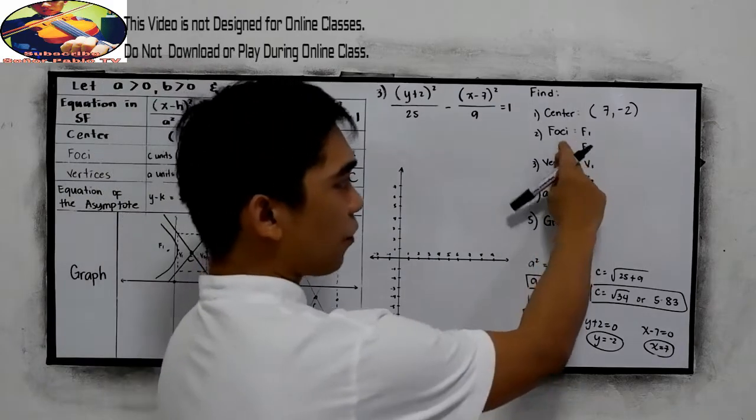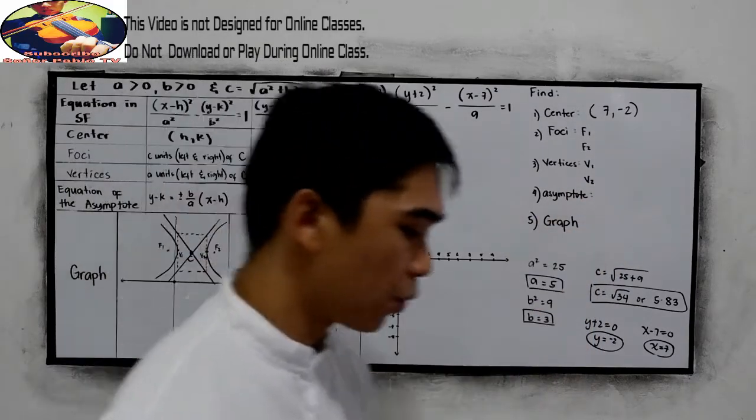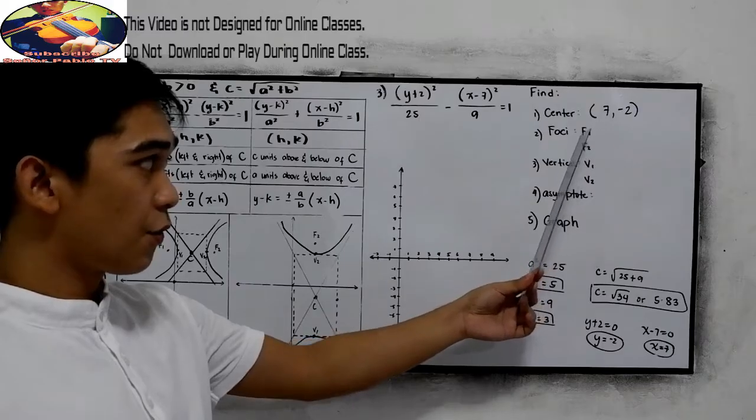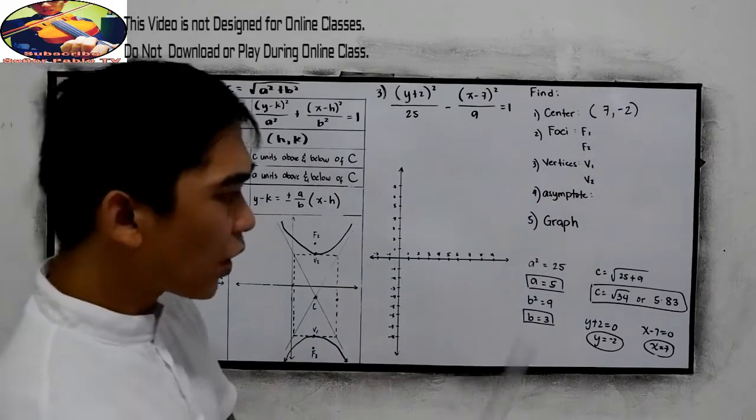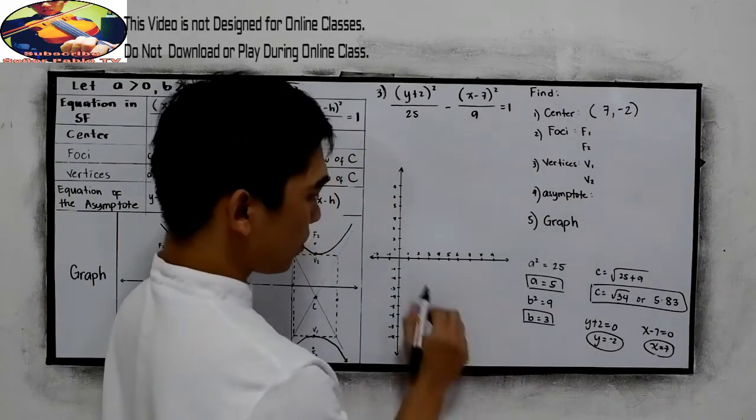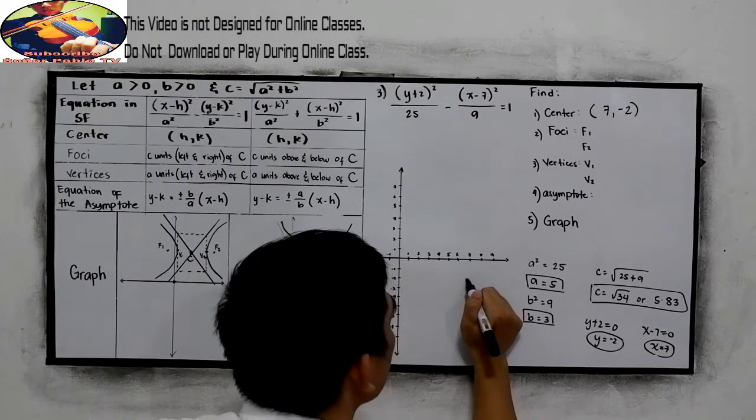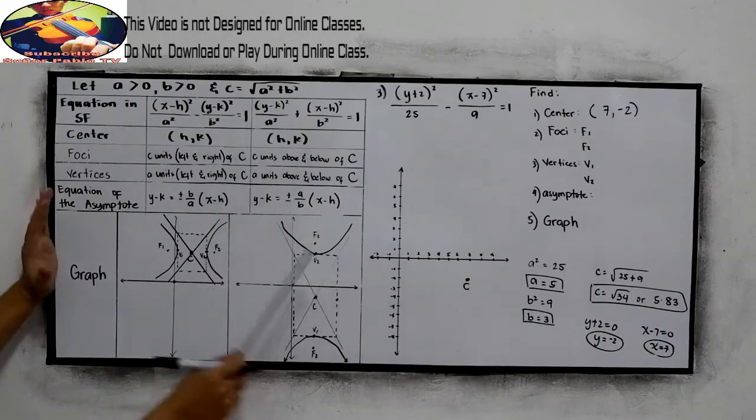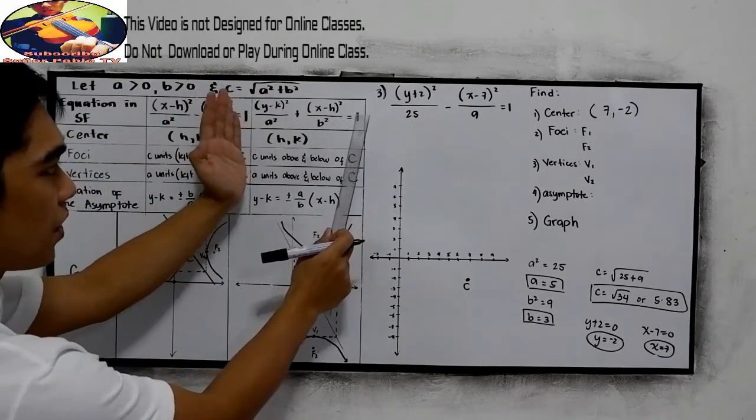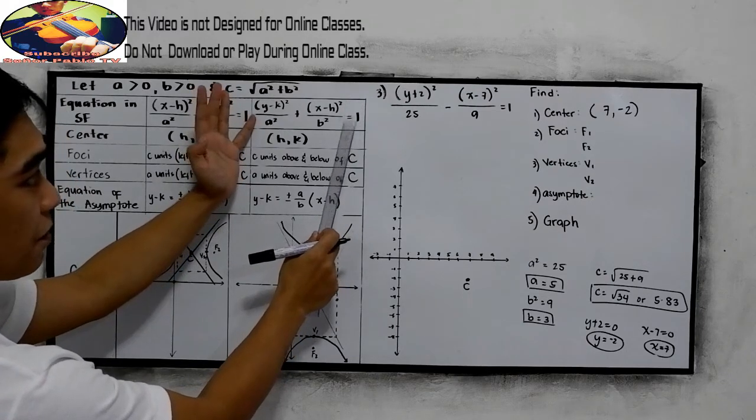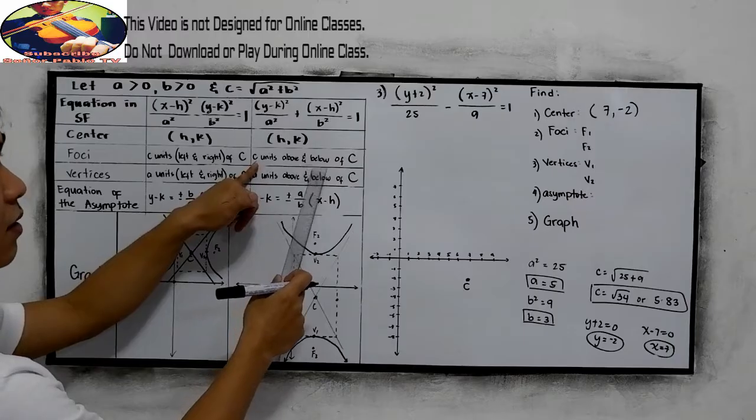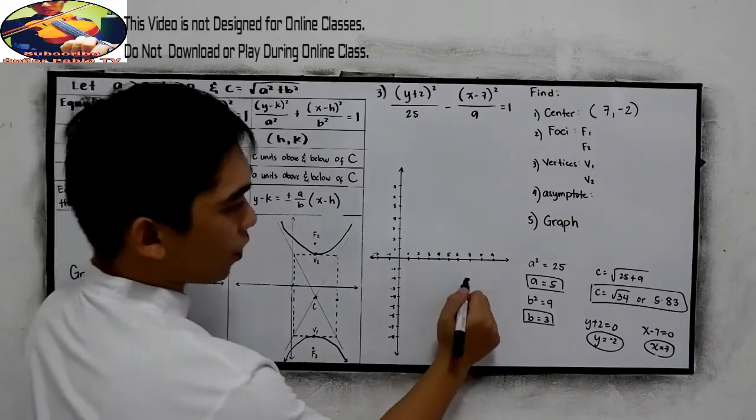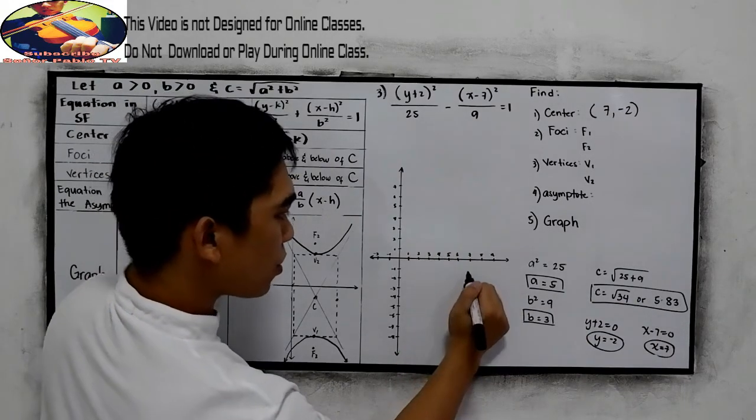Now we are ready to find the foci and the vertices. And of course, the equation of the asymptote. Let us find first our foci, the f sub 1 and f sub 2. So locate our center, 7 negative 2. So 7, then negative 2. So it's here. This is our center. Now, in our table, to find the foci, this is our equation form. Equation is standard form. So the foci is c units above and below of x. So our c is 5.83.